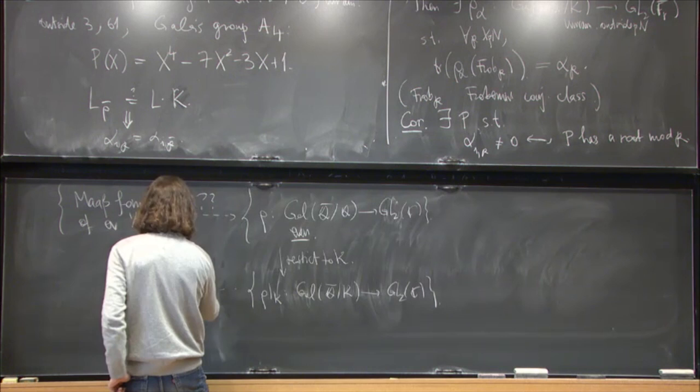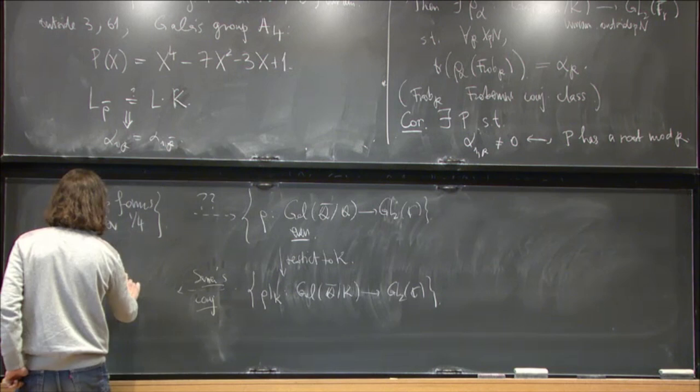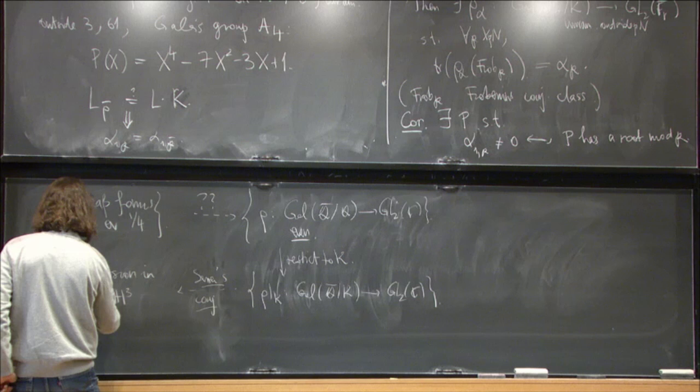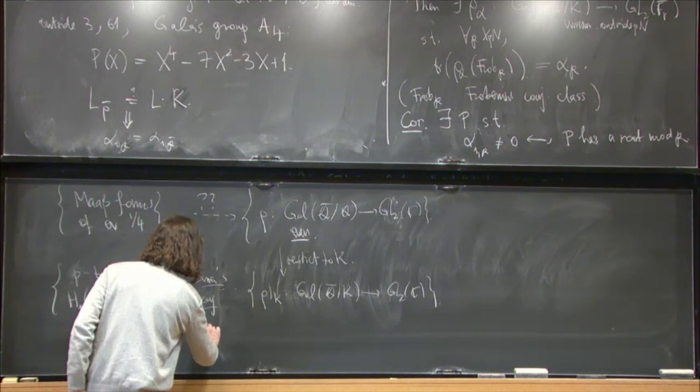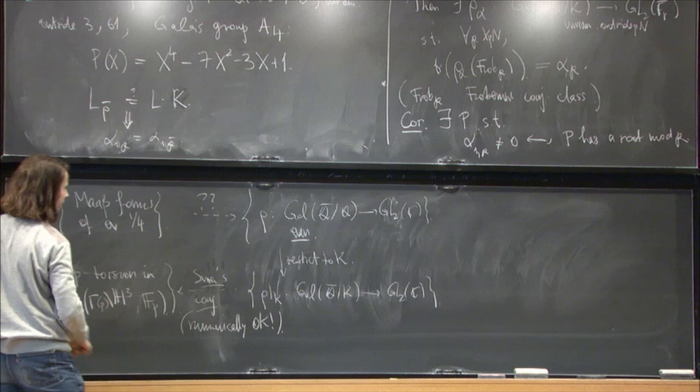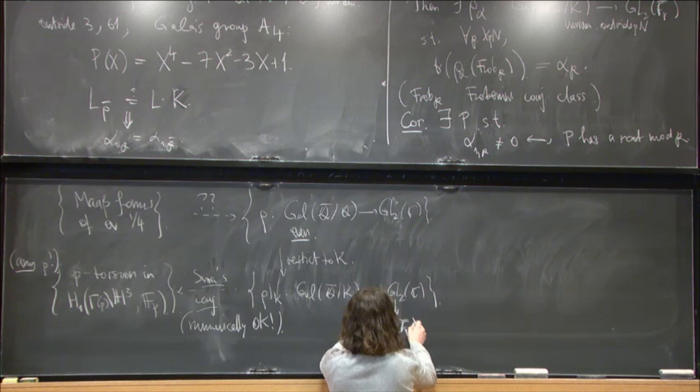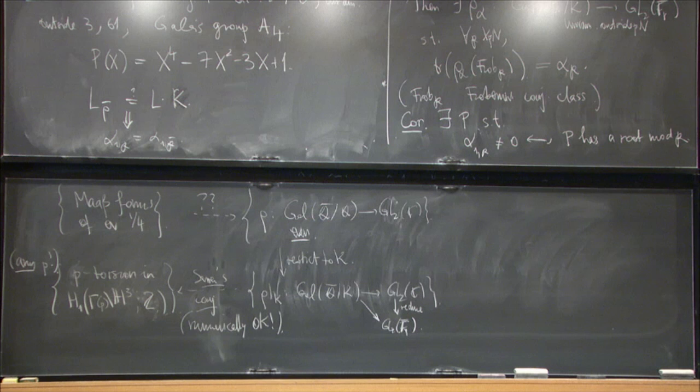But then you can make the following. So you can restrict this to K. So you get some restricted to K. And now there's no even odd distinction anymore. Because you're in an imaginary quadratic field, so complex conjugation is not there anymore. And so by Serre's conjecture, you expect that you can go back and find P torsion in the homology H3 mod gamma, where I join some level at P. And that's actually numerically tested.